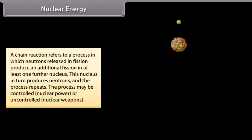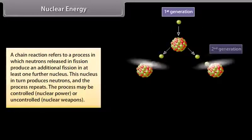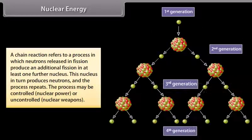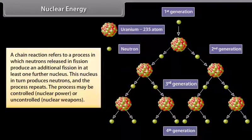Nuclear energy. A chain of reaction refers to a process in which neutrons released in fission produce an additional fission in at least one further nucleus. This nucleus in turn produces neutrons, and the process repeats. The process may be controlled, that is nuclear power, or uncontrolled, that is nuclear weapons.